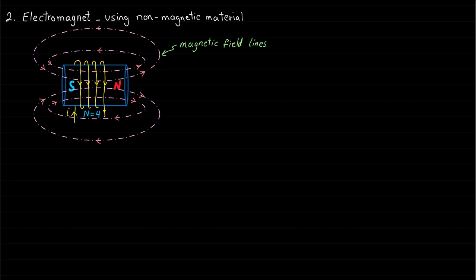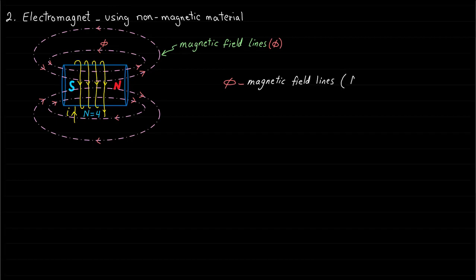In general, the magnetic field can be represented by four variables. The first variable, denoted by phi, is the magnetic field lines, which represent the existence of the magnetic field, also called flux lines. The unit of the magnetic field lines is Weber.